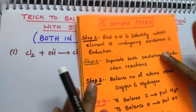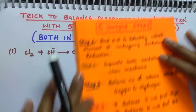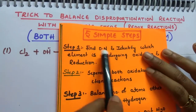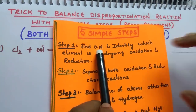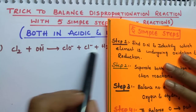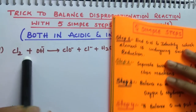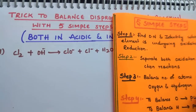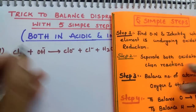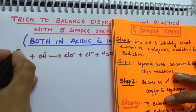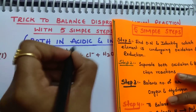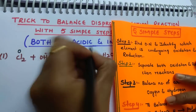Let me show you the 5 simple steps. Step number 1: find oxidation number. Whatever the reaction is there, find the oxidation number of each element. For example, 0 here, plus 1, minus 1.